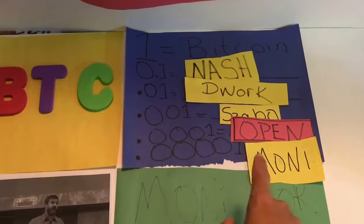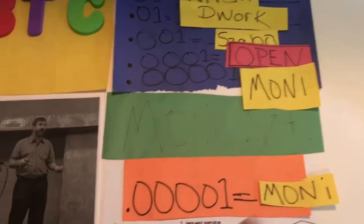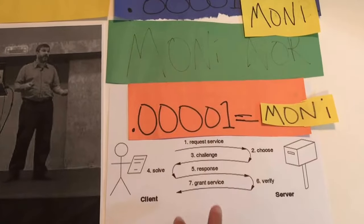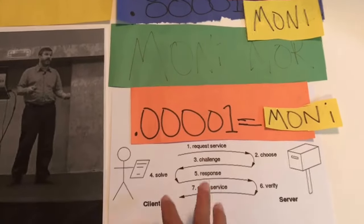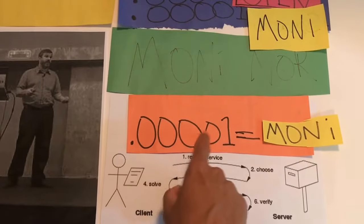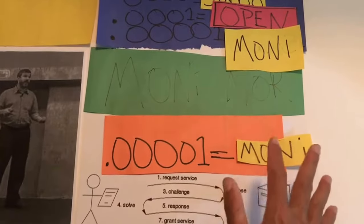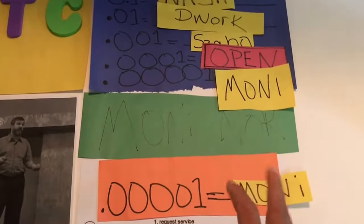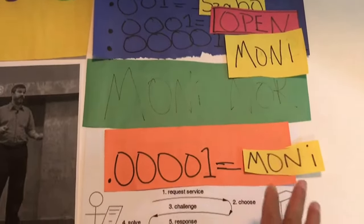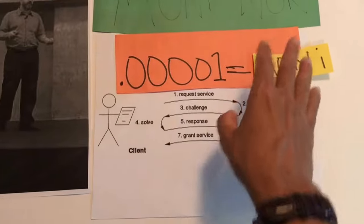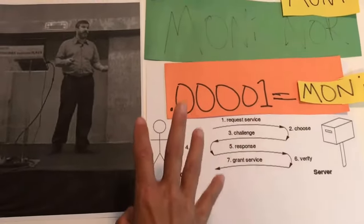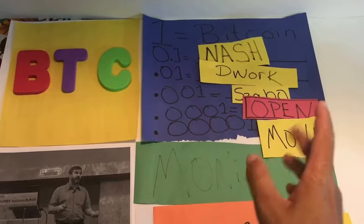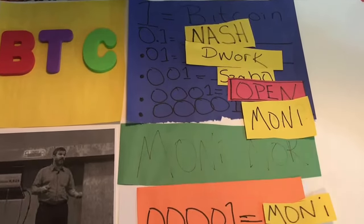The fifth denomination is 'Moni,' named after Moni Naor, who co-authored the proof-of-work concept paper with Cynthia Dwork. It sounds a bit like 'money,' which might be too on the nose, but I preferred it over 'Naor' since that sounded too similar to 'Dork.' Moni Naor's proof-of-work paper, published in the 90s, was instrumental for the conception of Bitcoin.